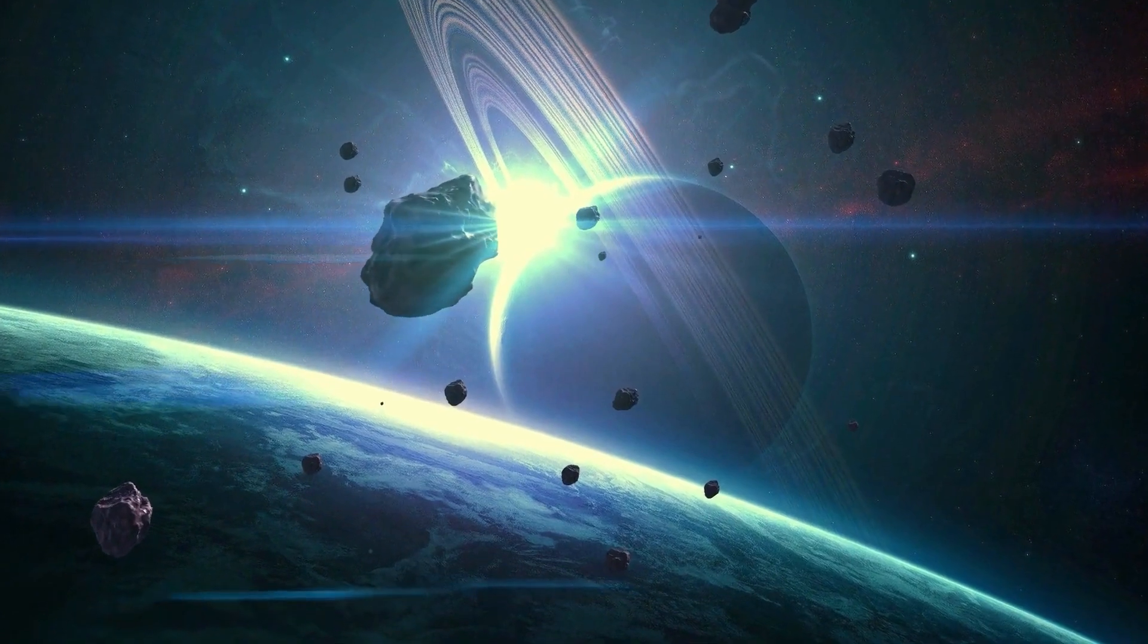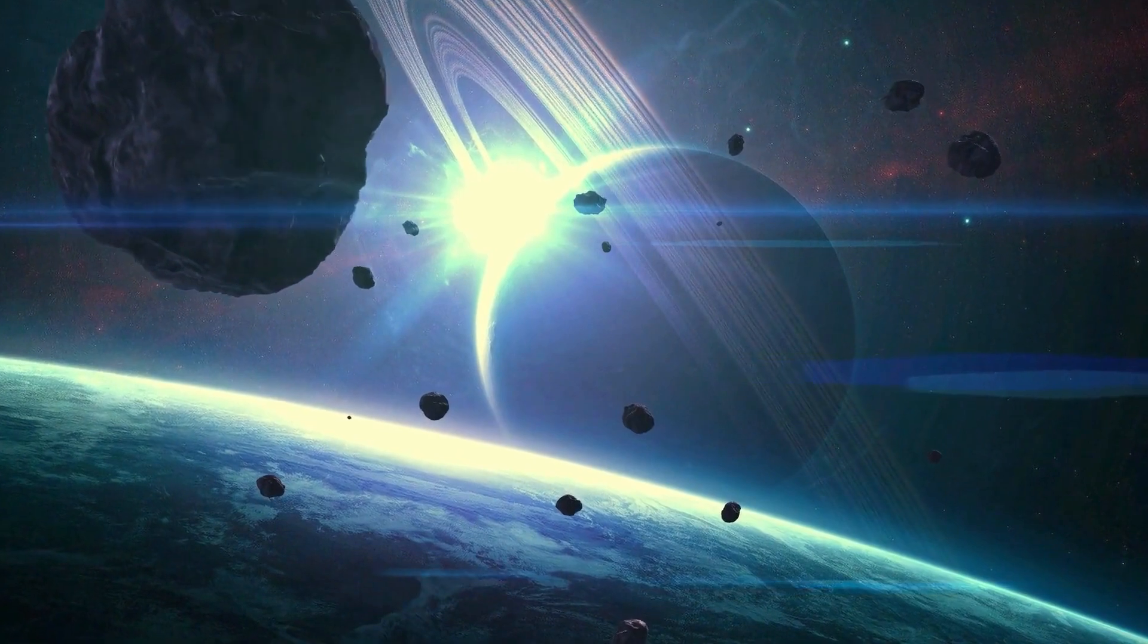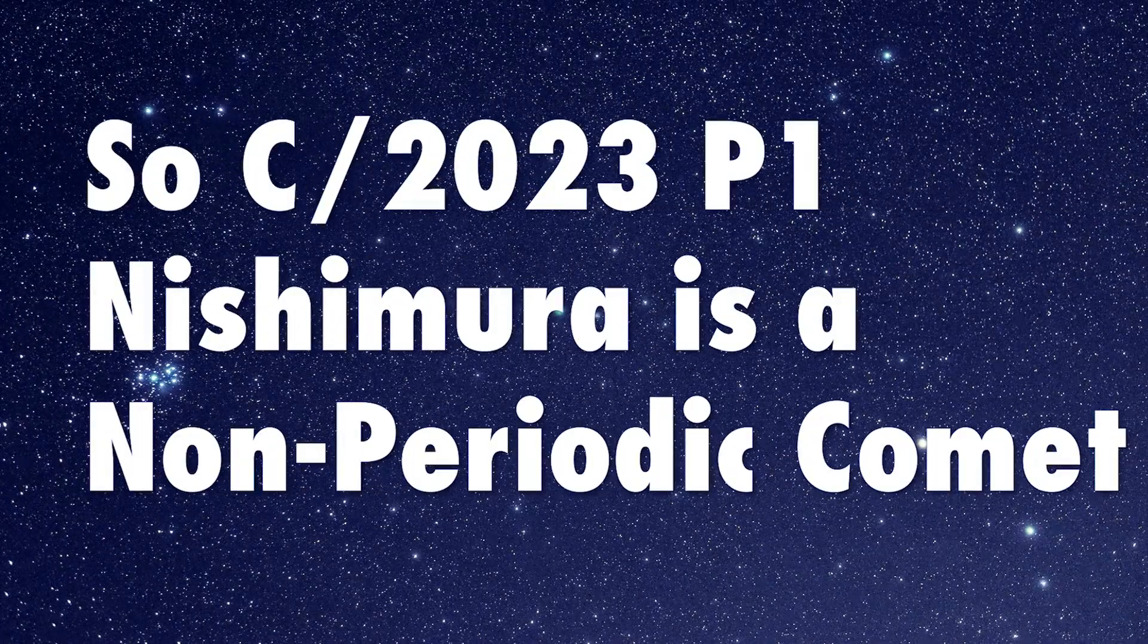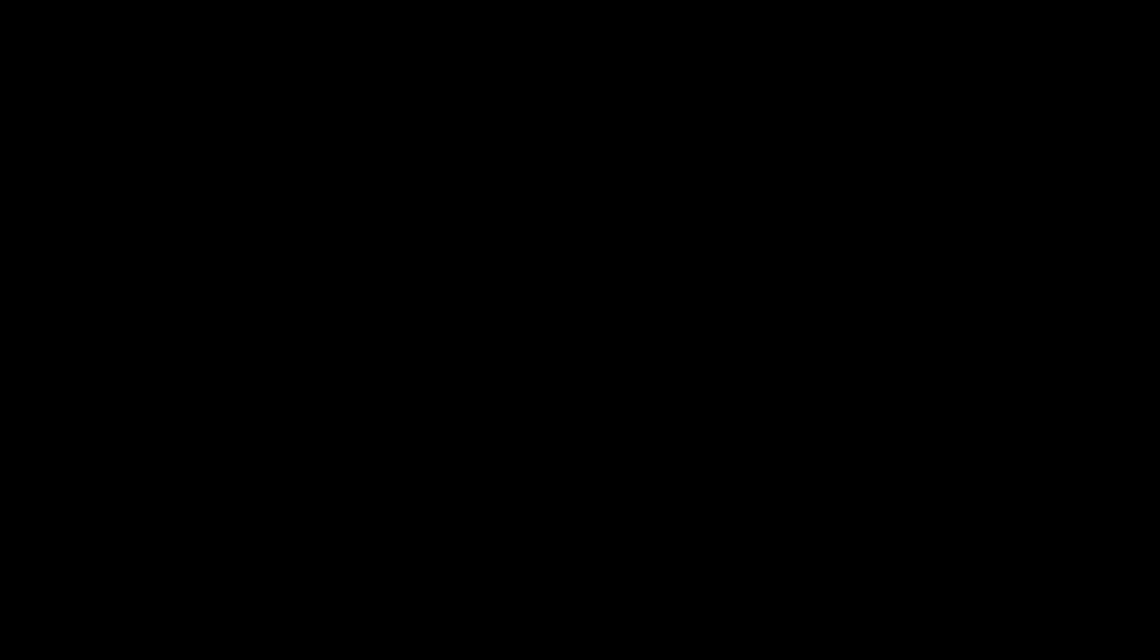In some cases, significant comets are assigned additional names to reflect their characteristics or significance. So, C-2023-P1 Nishimura is a non-periodic comet, and the first object discovered in the first half of August 2023 by amateur astronomer Hideo Nishimura.